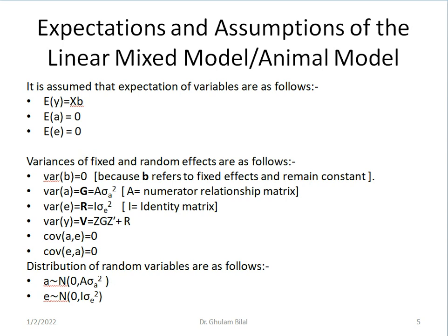We assume that covariance between breeding values and residuals is 0. And similarly between residuals and breeding values is 0. We assume that breeding values are distributed normally with mean 0 and variance A times sigma square A. Residuals are normally distributed with mean 0 and variance I times sigma square E.